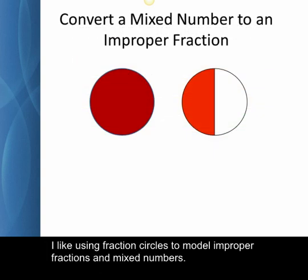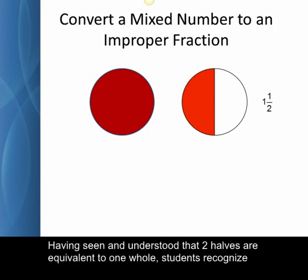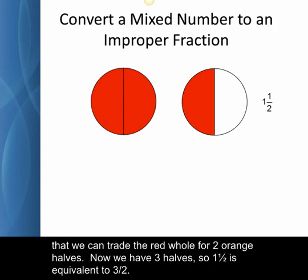I like using fraction circles to model improper fractions in mixed numbers. I model one-and-a-half as shown here and ask how many halves are equivalent to one-and-a-half. Having seen and understood that two halves are equivalent to one whole, students recognize that we can trade the red whole for two orange halves. Now we have three halves, so one-and-a-half is equivalent to three halves.